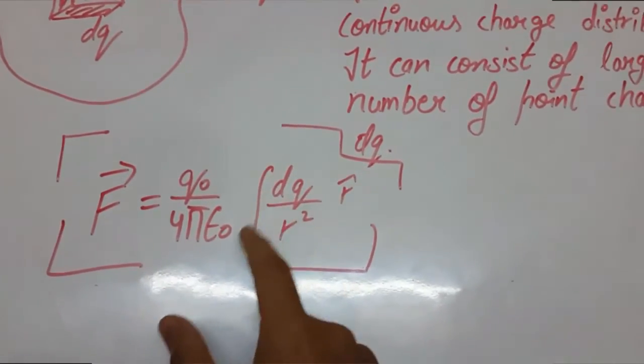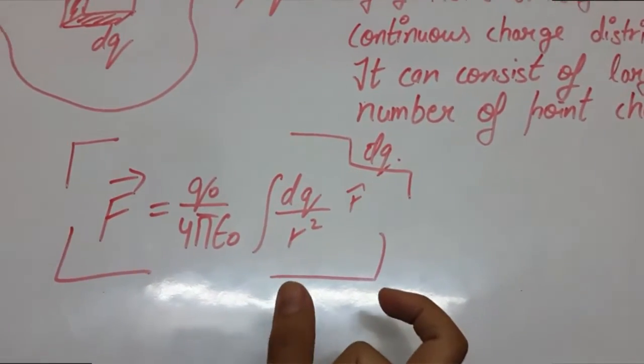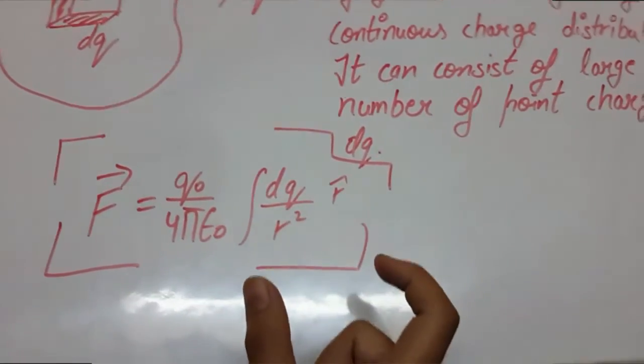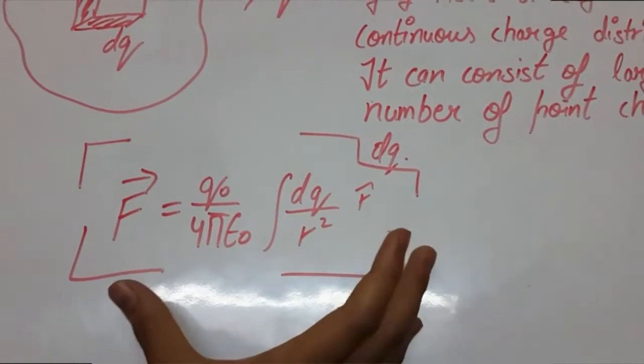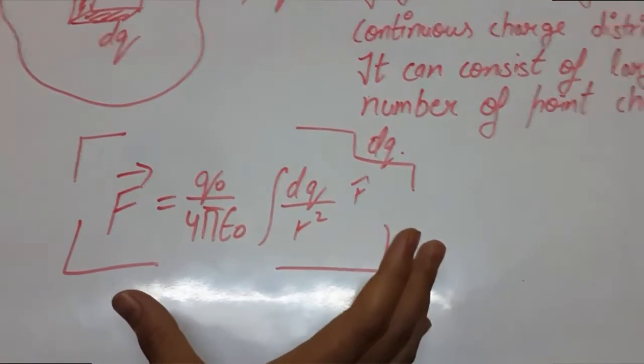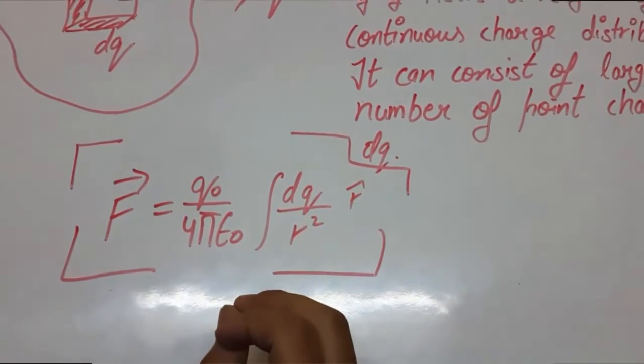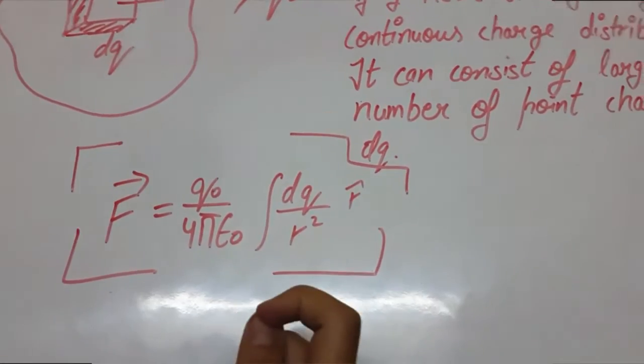Here we are using the integral of dq because dq is a small region and by integral we can get the total number of charges lying in that region. So this is the equation by which we can get the force exerted on q0 charge due to a region, a small region of charges or multiple charges.